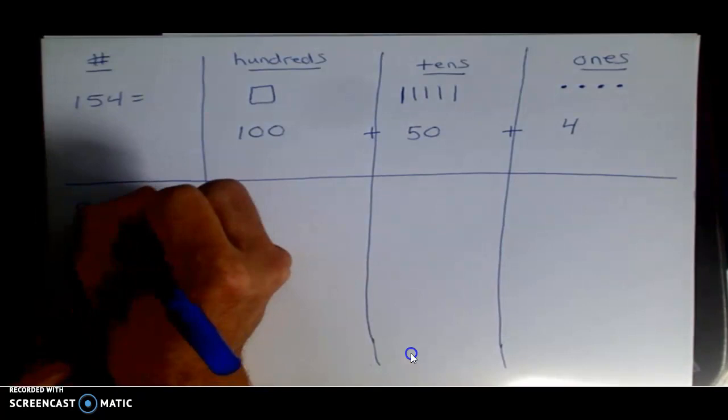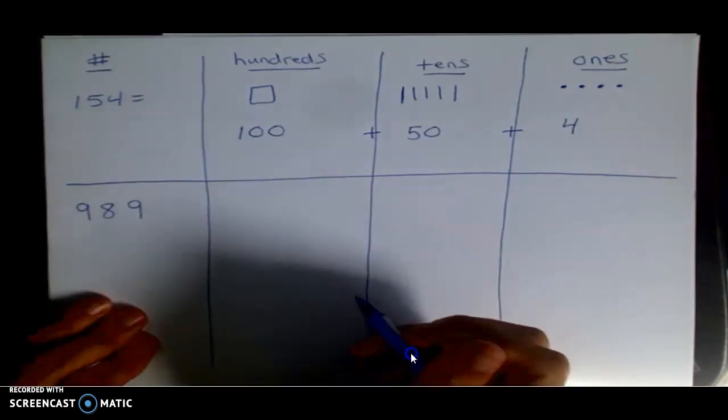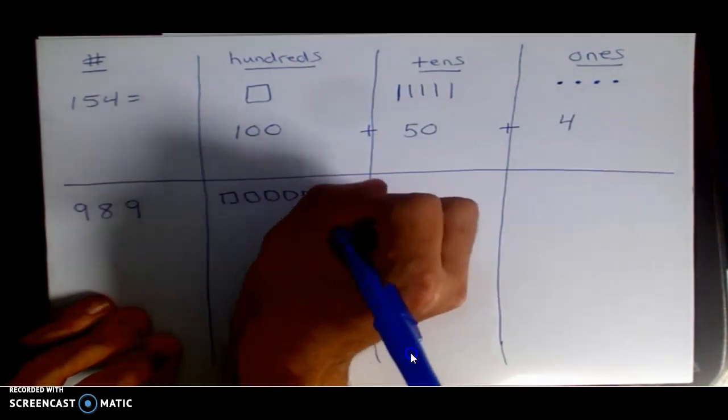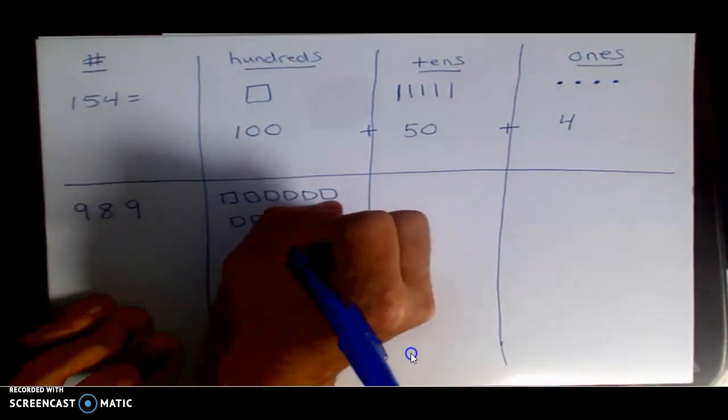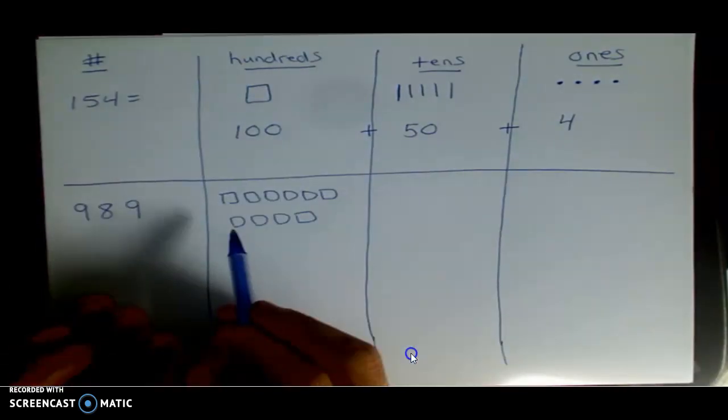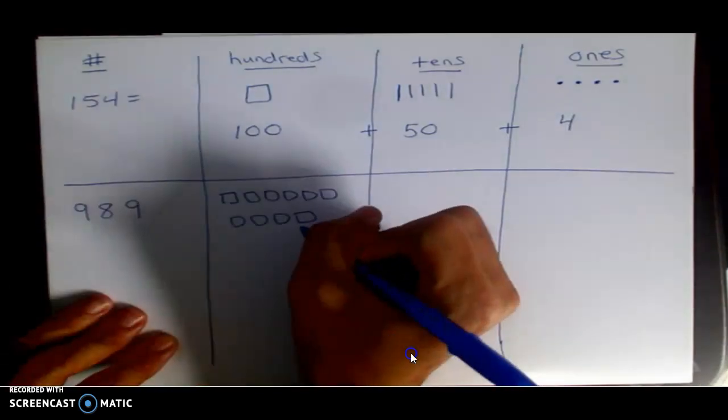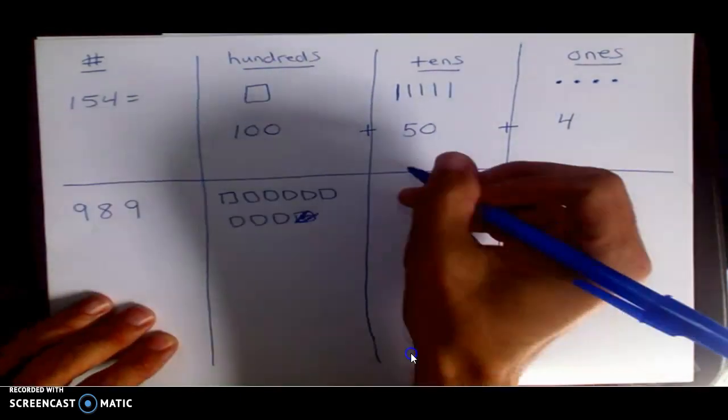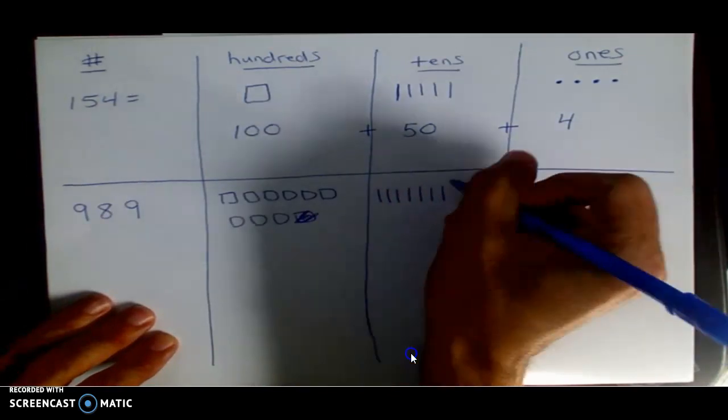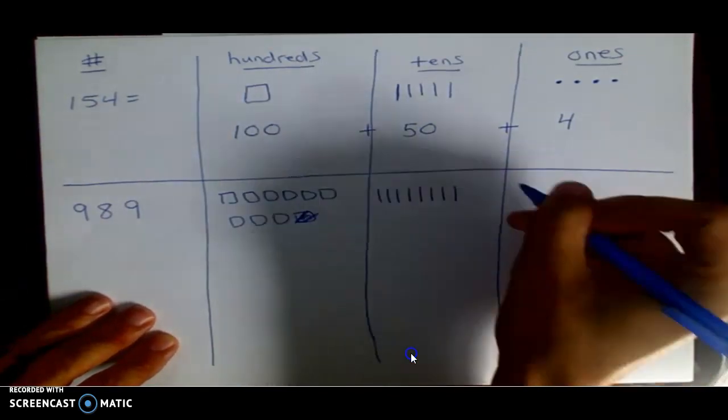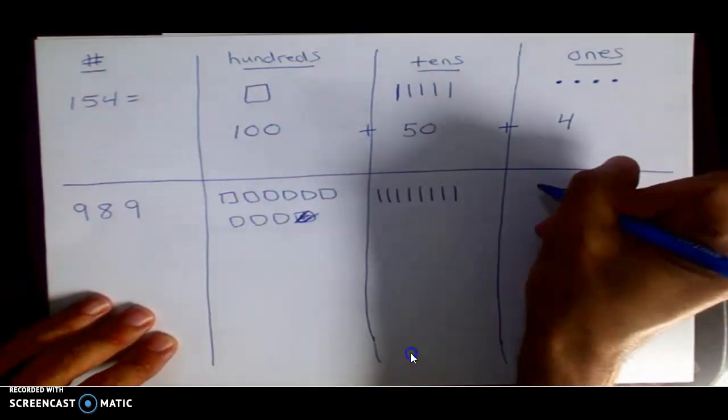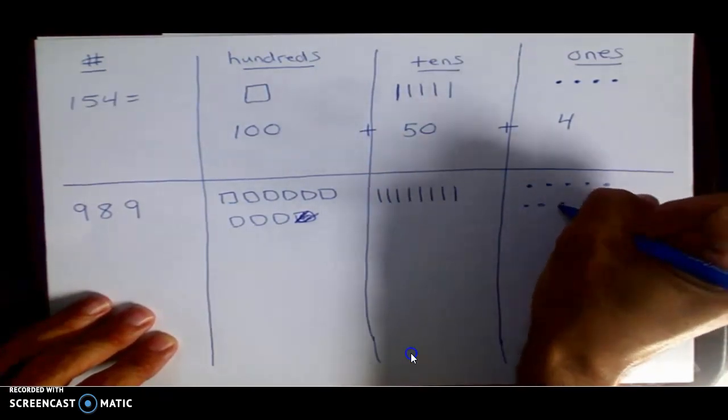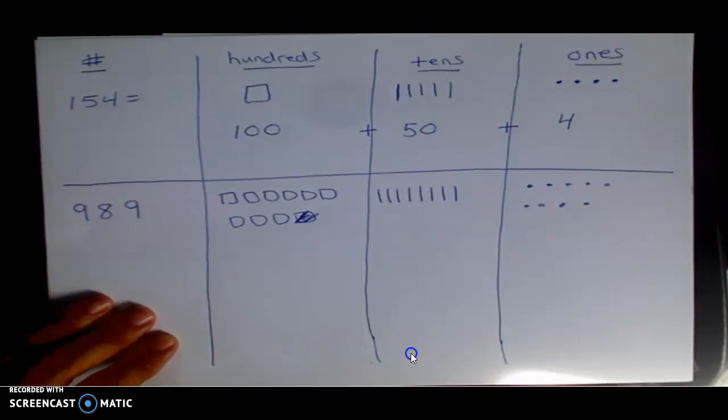That number is done, so I draw another line. Let's say I did another number. Let's say we did 989. You would draw nine hundreds. I think that's nine hundreds. Let me count: one, two, three, four, five, six, seven, eight. Oh, I drew too many. Cross that off or erase it. I've got eight tens, so 10, 20, 30, 40, 50, 60, 70, 80. And I have nine ones: one, two, three, four, five, six, seven, eight, nine.